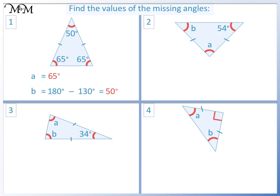Question 2. These two angles are the same, so b is 54 degrees. Next we'll find a. 54 plus 54 equals 108. 180 take away 108 equals 72, and so a is 72 degrees.